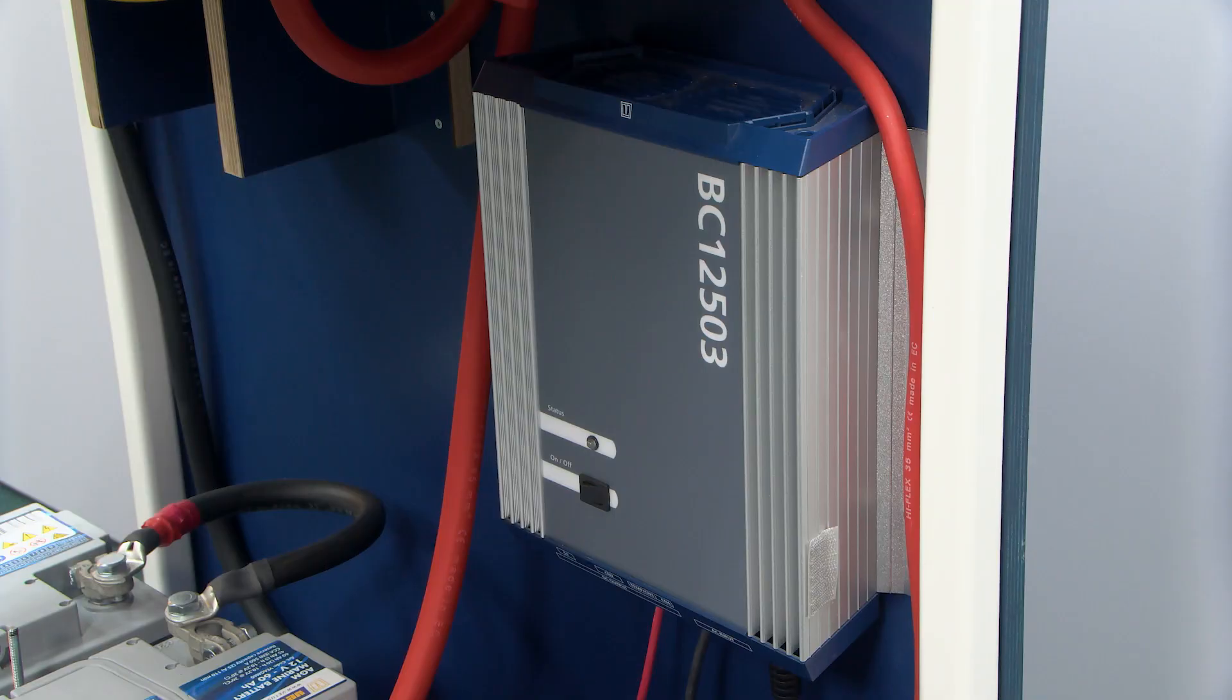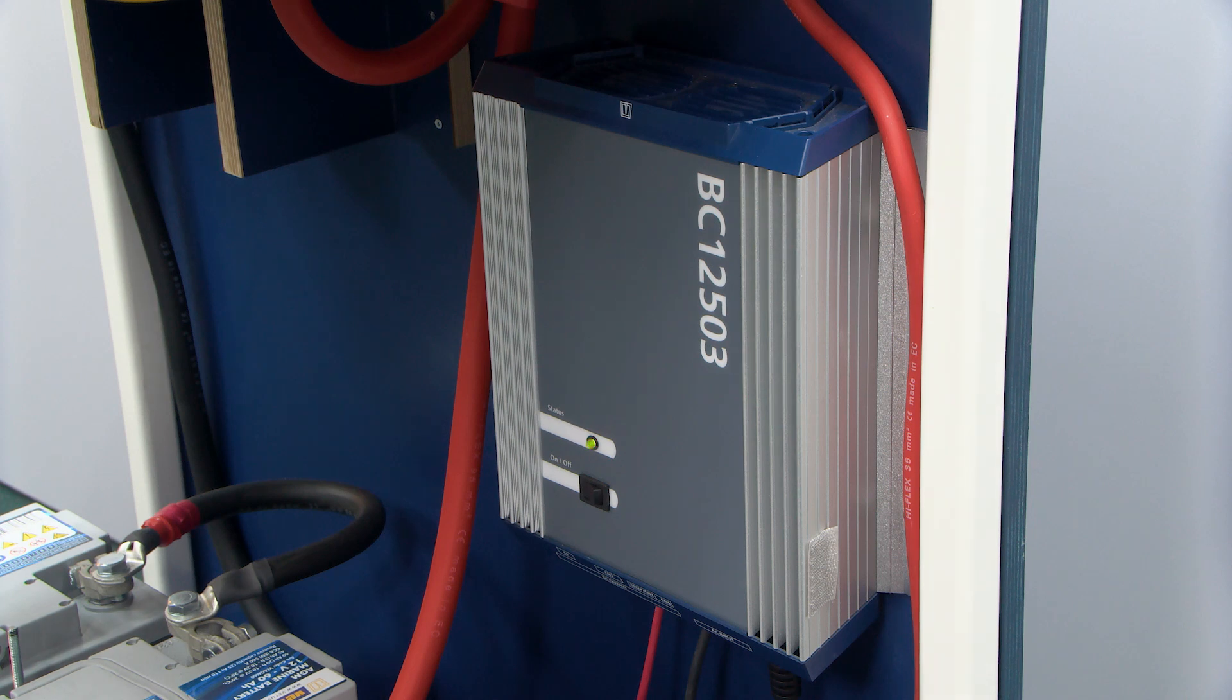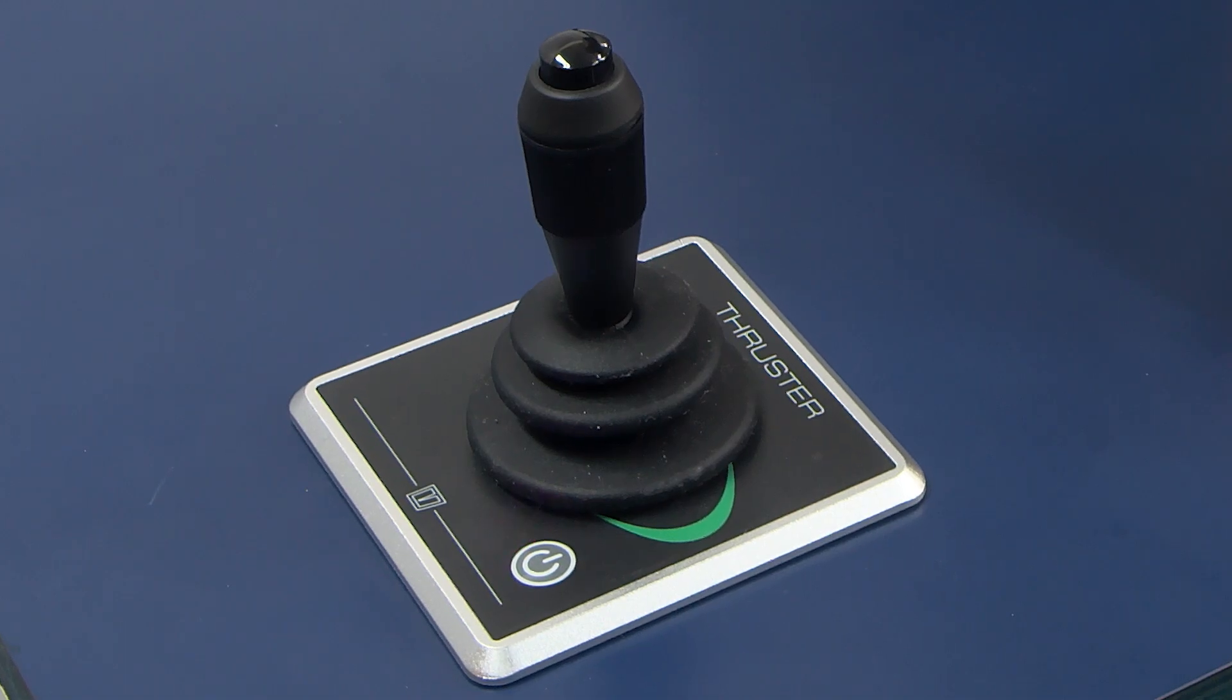If your values without load are not within the range recommended by Vetus, first completely charge your batteries. If the voltage in a 24 volt system falls below 21 volts when it's under load, the low voltage alarm will go off.